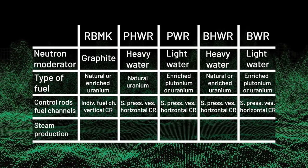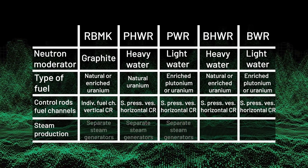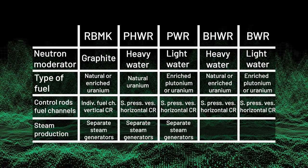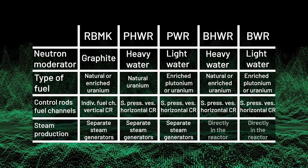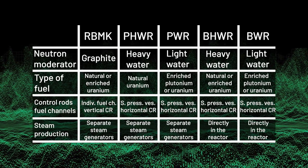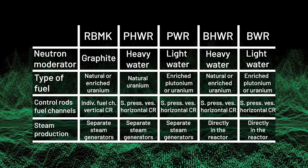Fourth, production of steam, which helps generate power: in the RBMK, PHWR, and PWR, steam is produced in separate steam generators, whereas in the BHWR and BWR, steam is produced directly in the reactor. There is also the void coefficient of reactivity, which is important — but similar to the specific reactor types, it deserves a whole separate episode, especially since this term was used many times in HBO's Chernobyl and many of you may already know it.